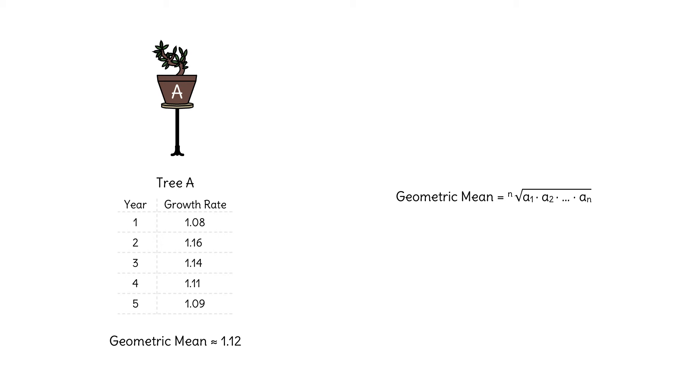Blanca's first tree is a little behind the curve at 12%. Remember, she's hoping to find a tree whose geometric mean is pretty close to 15%.